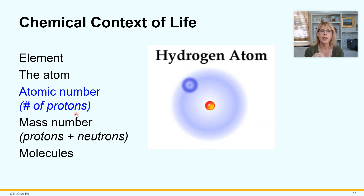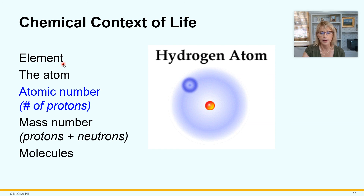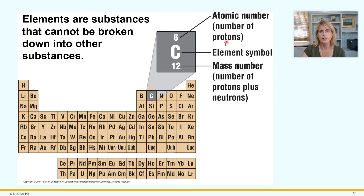For example, this element has an atomic number of six, so it has six protons in its nucleus. Every atom that has six protons in its nucleus is a carbon atom. This is a simplified periodic table, and we will pick up here at the beginning of the next lecture.